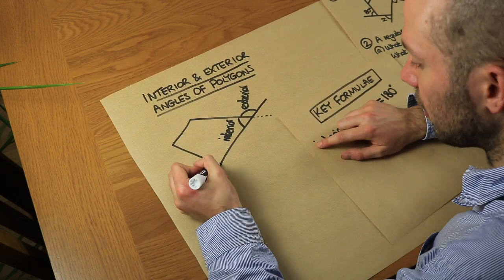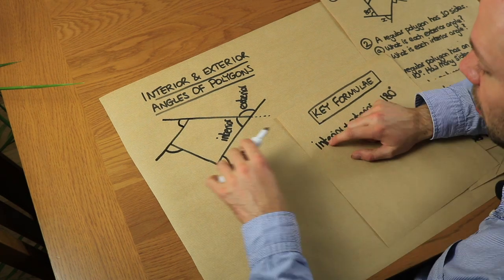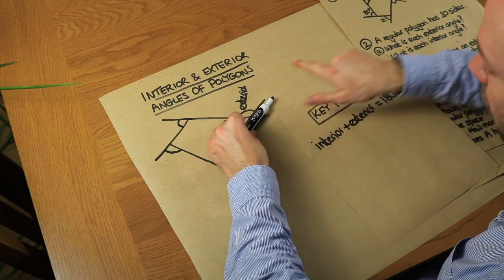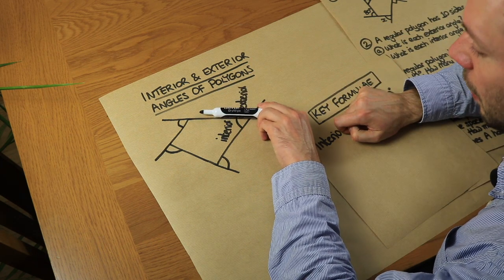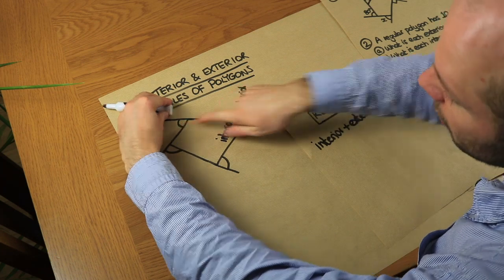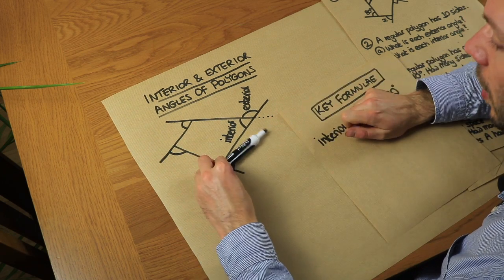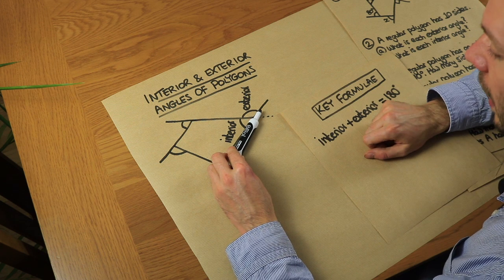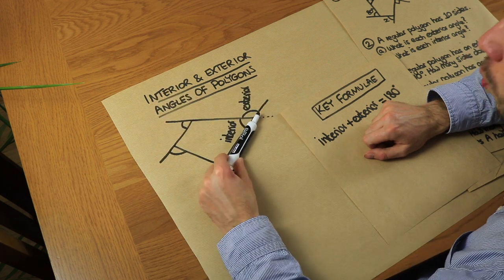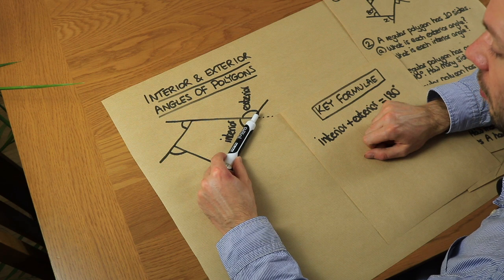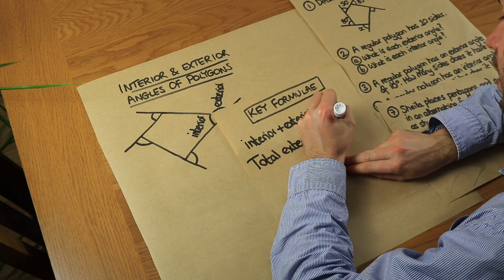Now suppose we extend all of the sides so we have multiple exterior angles. Imagine my pen is someone facing in a direction — starting here, it turns through each exterior angle in turn: turning at each vertex, going around the polygon, and ending up facing its original direction. My pen has done one full spin, so it must have turned 360 degrees. That means the total of all exterior angles equals 360 degrees.